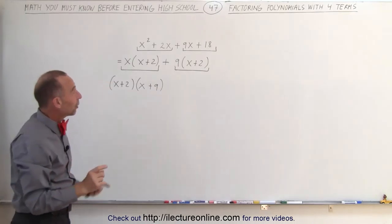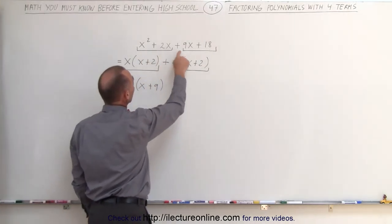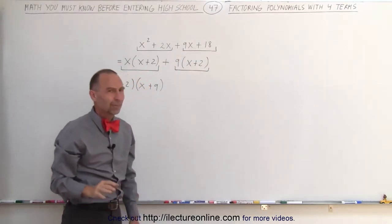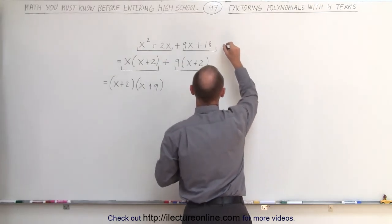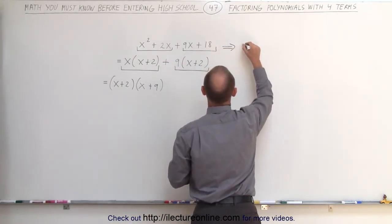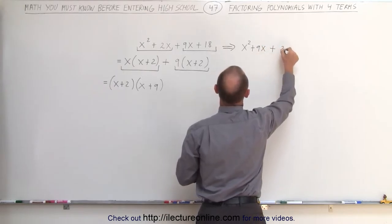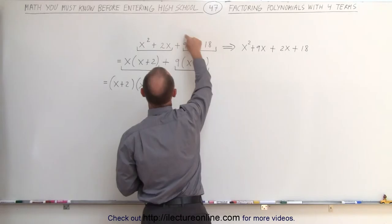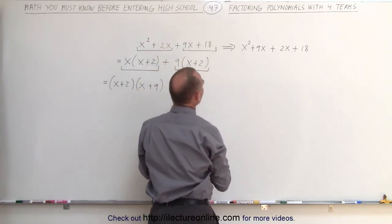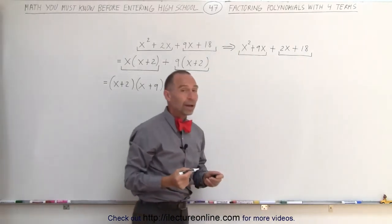Now it actually doesn't matter which way we group them together. For example, I can group the first and third terms together and the second and fourth together. Let me try that to see if it really makes no difference. I'm going to rewrite this as x squared plus 9x plus 2x plus 18. So now I've put the 9x here and the 2x over there. I can group these two together and these two together exactly the same way.